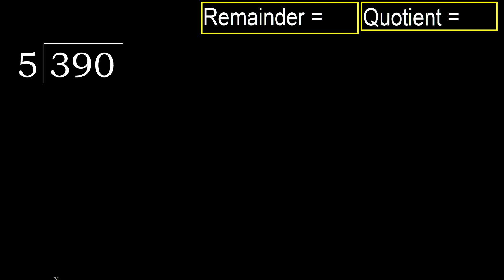390 divided by 5. 3 is less, therefore next. 39 is not less, therefore with 39.